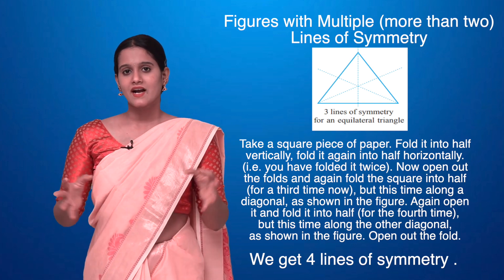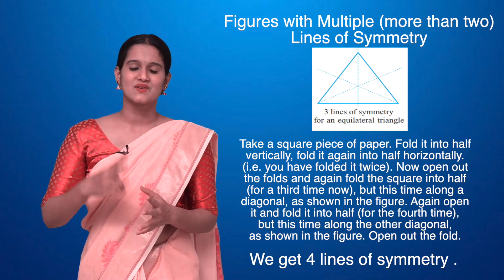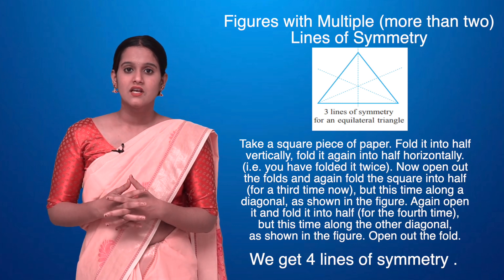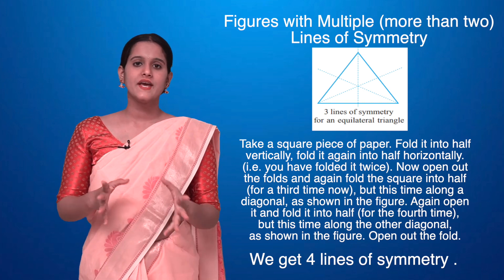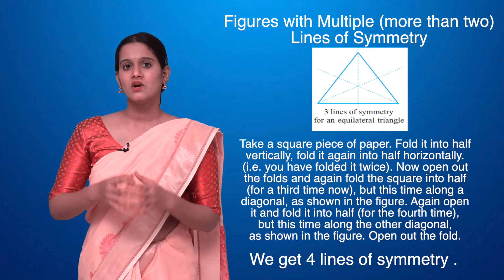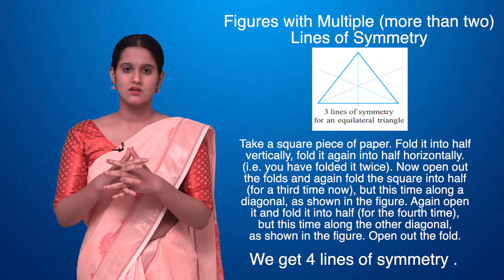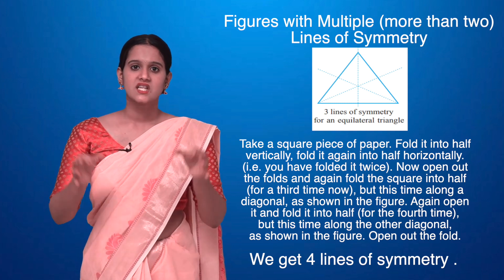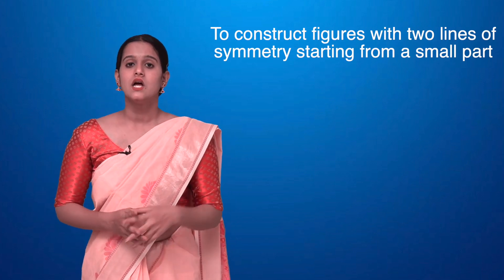For a square, all sides are equal so we get four lines of symmetry; for a rectangle only two. Similarly, an equilateral triangle has three equal sides, so it has three lines of symmetry. For an isosceles triangle, only two sides are equal, so there is only one line of symmetry. For a scalene triangle, no sides are equal, so there are no lines of symmetry at all.